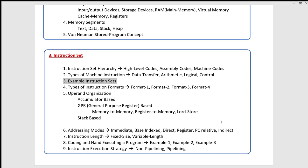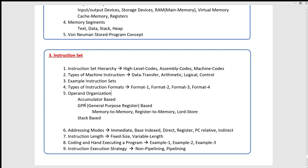The instruction types are: data transfer instructions, arithmetic instructions, logical instructions, and control instructions. I will record this command as an opcode. I will give a command — the command is ADD. It will be R1 = R2 + R3. I will record this command as an opcode. If you use the opcode or command, you can use it as a format — you can use the format in the instruction.